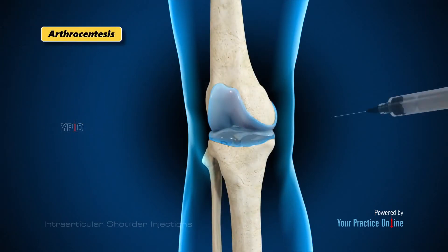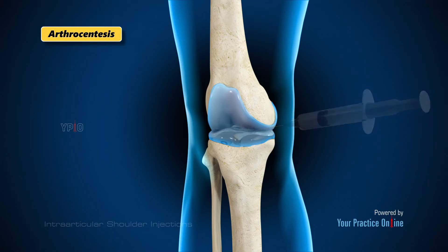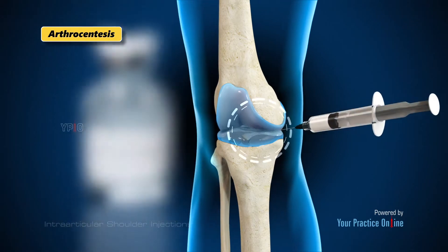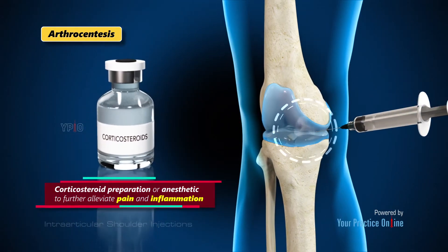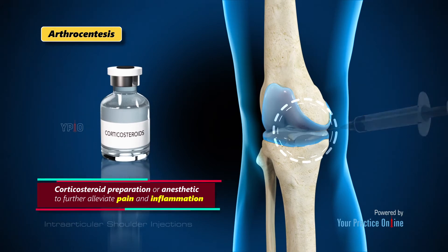Arthrocentesis is a procedure where excess joint fluid is removed with a needle that is inserted into the joint space. It is done to reduce swelling and pain in the knee. Usually after removing the excess joint fluid, your doctor will use the same puncture site to inject a corticosteroid preparation or anesthetic to further alleviate pain and inflammation.